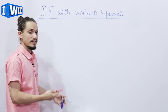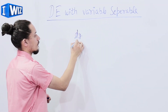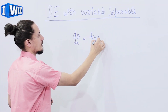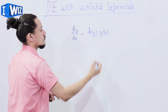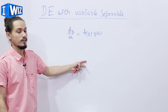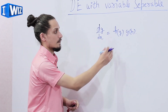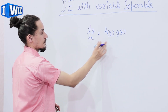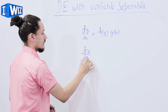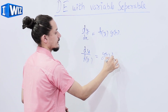So what is variable separable? Suppose we have a differential equation dy/dx is equal to h(y)·g(x). The first step is to separate the variables. We get dy/h(y) is equal to g(x)·dx.